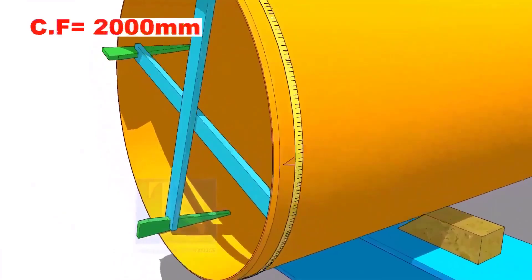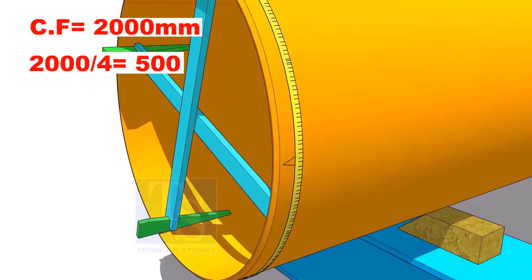Assume that the circumference is 2000 mm. Divide it by 4. Now you have the arc length of 90 degrees.